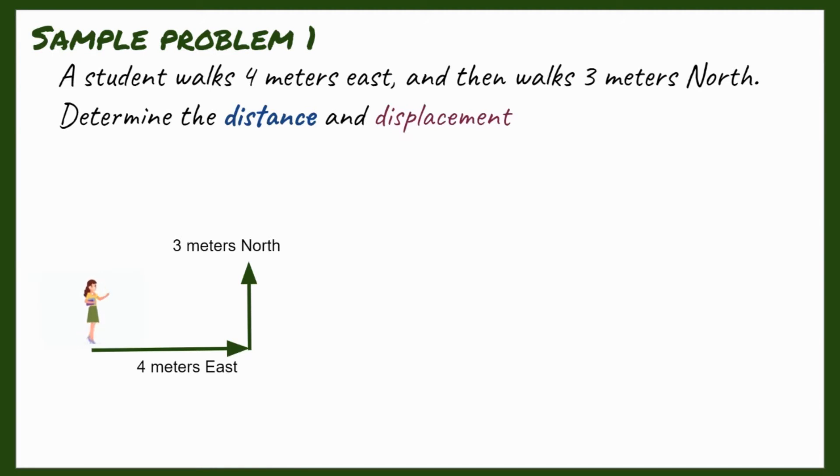Finding the distance is simple. We simply add the 4 meters and 3 meters. Since distance is a scalar quantity, we disregard the direction, meaning no need to write the direction. So, the distance would be 7 meters.